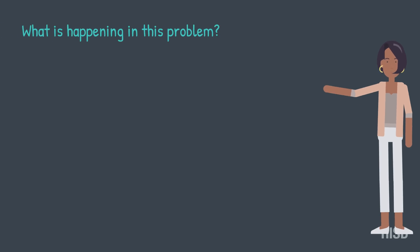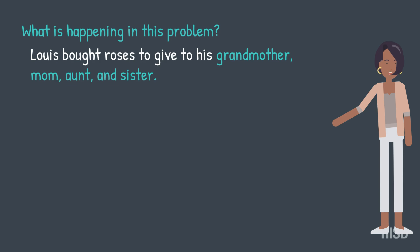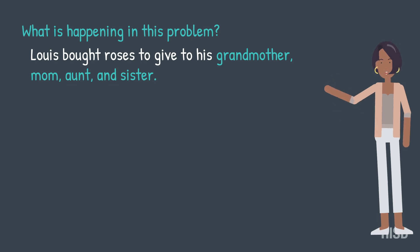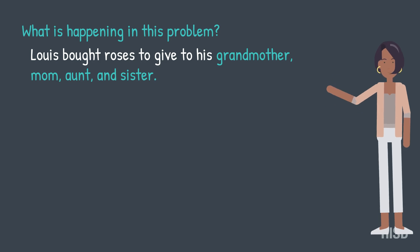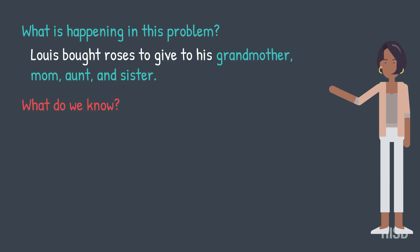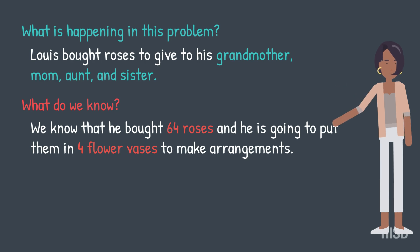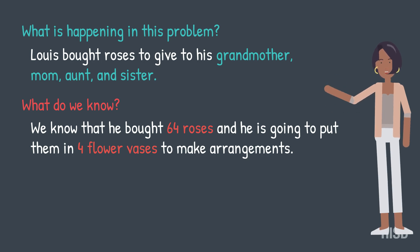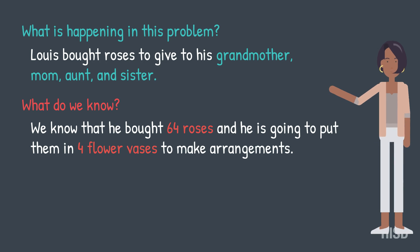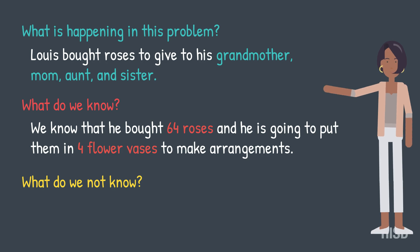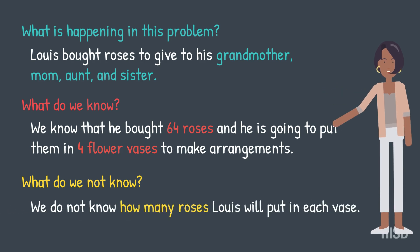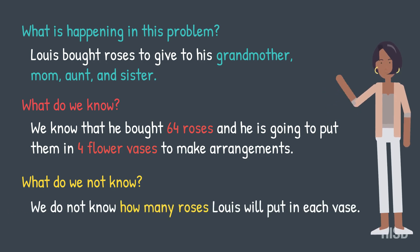What is happening in this problem? Louis bought roses to give to his grandmother, mom, aunt, and sister. What do we know? We know that he bought 64 roses and he is going to put them in four flower vases to make arrangements. What do we not know? We do not know how many roses Louis will put in each vase.